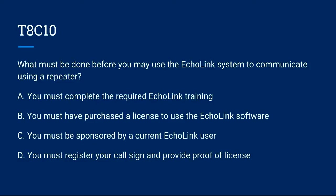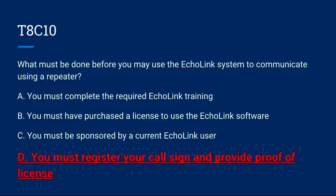T8C10: What must be done before you may use the Echolink system to communicate using a repeater? A. You must complete the required Echolink training. B. You must have purchased a license to use the Echolink software. C. You must be sponsored by a current Echolink user. Or D. You must register your call sign and provide proof of license. The correct answer is D: you must register your call sign and provide proof of license.